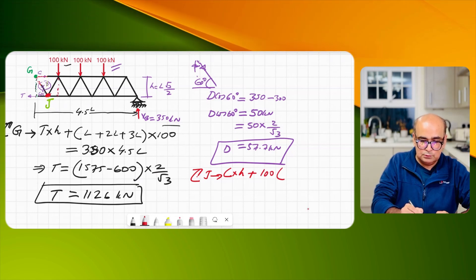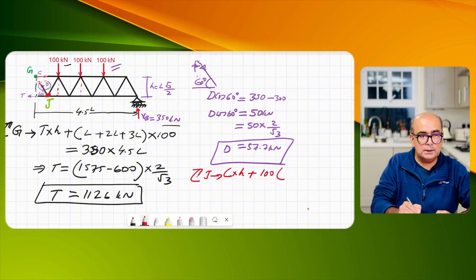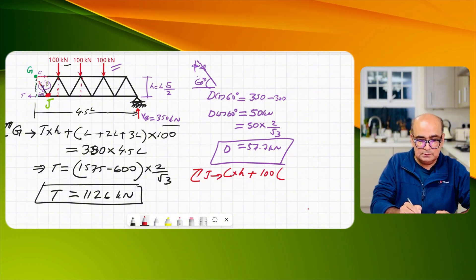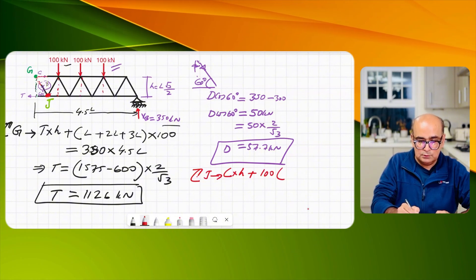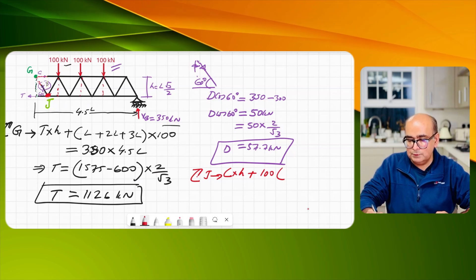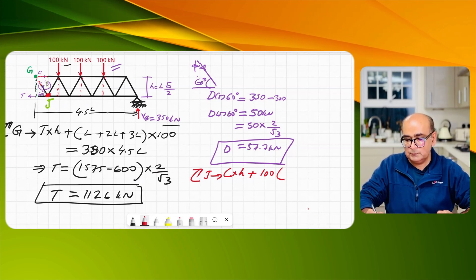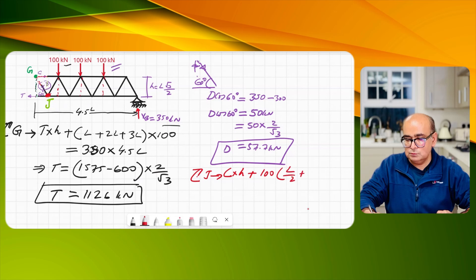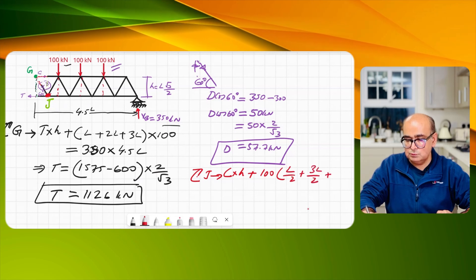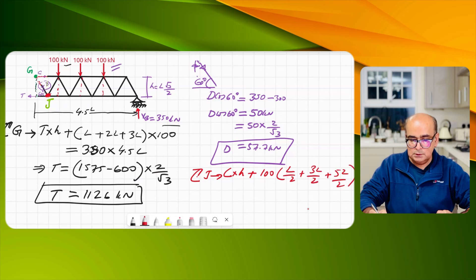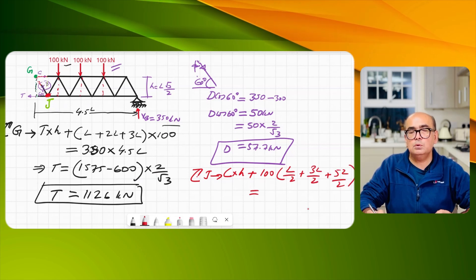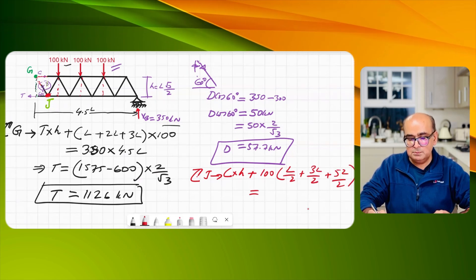100, so it will be 100 into if I draw this line for the first one it is L over 2, the second one it will be 3L over 2, and third one will be 5L over 2. So L over 2 plus 3L over 2 plus 5L over 2 that is equal to load generated by reaction.